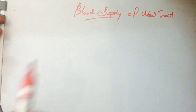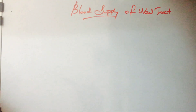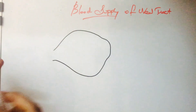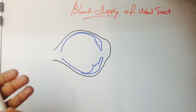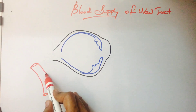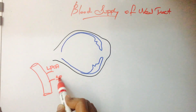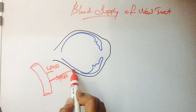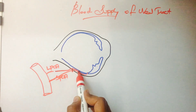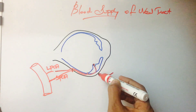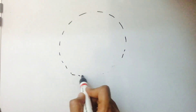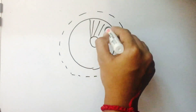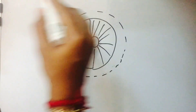Now a review of blood supply of the uveal tract. Remember two terms: the major arterial circle and the minor arterial circle. From the ophthalmic artery we have two important branches: the long posterior ciliary artery and the short posterior ciliary artery. These arteries run in the suprachoroidal space and anastomose with the anterior ciliary arteries.